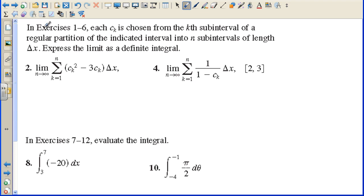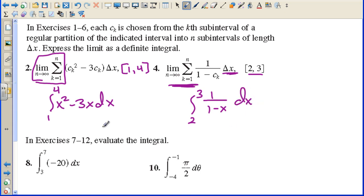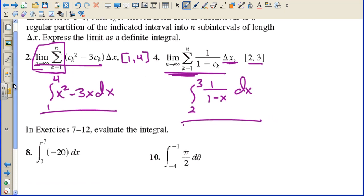Here's what our homework is going to look like. In exercises 1 through 6, each c sub k is chosen from the kth subinterval of a regular partition of the indicated interval into n subintervals of length delta x. Express the limit as a definite integral. All of this right here becomes the integral sign. This is x squared minus 3x, and this is the change in x, dx. The 1 to 4 would go right here. On this one, this becomes the elongated s. We're going from 2 to 3, and we're integrating 1 over 1 minus x, and this delta x becomes dx. This is Greek, this is Roman.